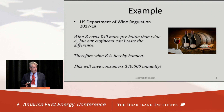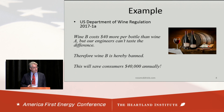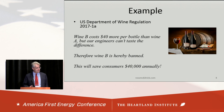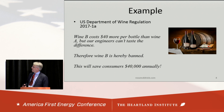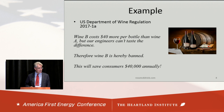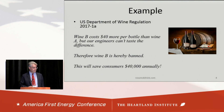Now, the U.S. Department of Wine regulation fortunately does not exist, but if it did, here's what they would say. Wine B costs $40 more per bottle than wine A, but our engineers can't taste the difference. And both bottles have the same amount of wine in them, so we're going to ban bottle B. The reasoning is: we will save customers $40,000 a year. They're not allowed to buy the $50 bottle anymore, they can buy the $10 bottle. Each time they save $40 a bottle, so that means we've just saved consumers $40,000 a year. You're welcome.